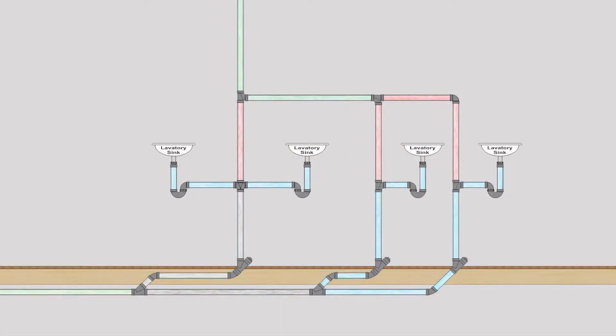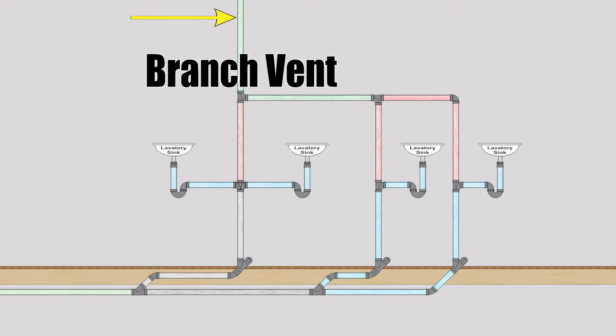In this next picture, we see those same two individual vents joining together on the right hand side. The branch vent comes across and then it meets up with the dual vent going straight up. Now the pipe that goes straight up from that in green is in fact a branch vent as well.